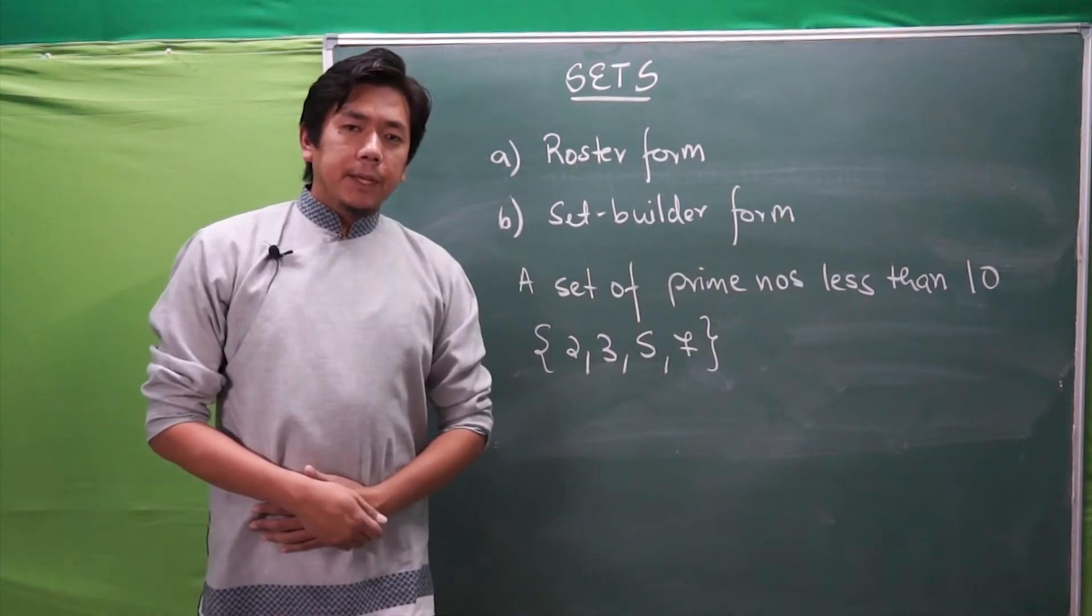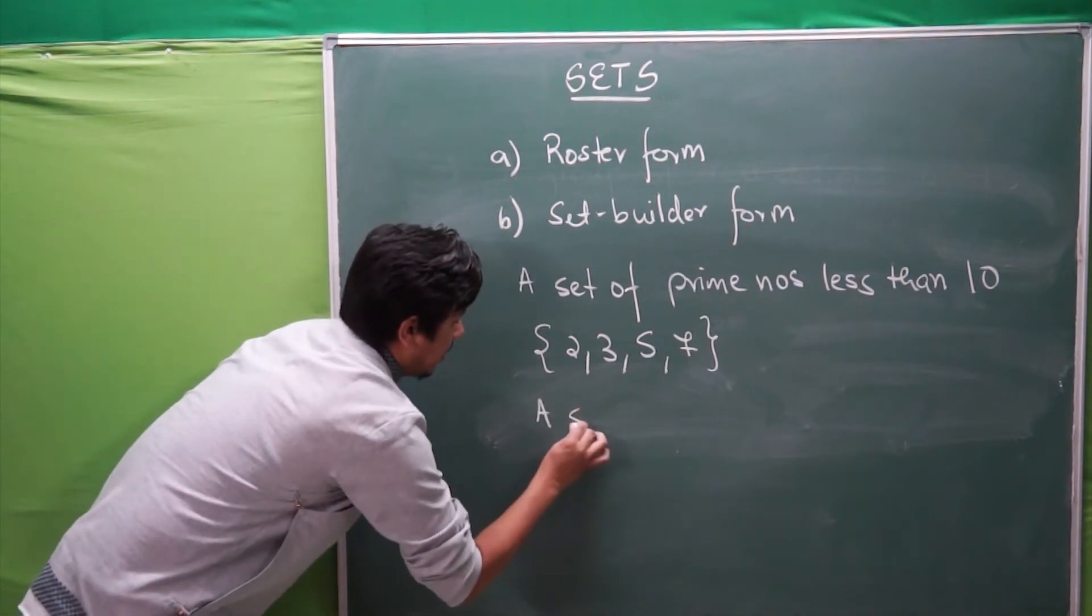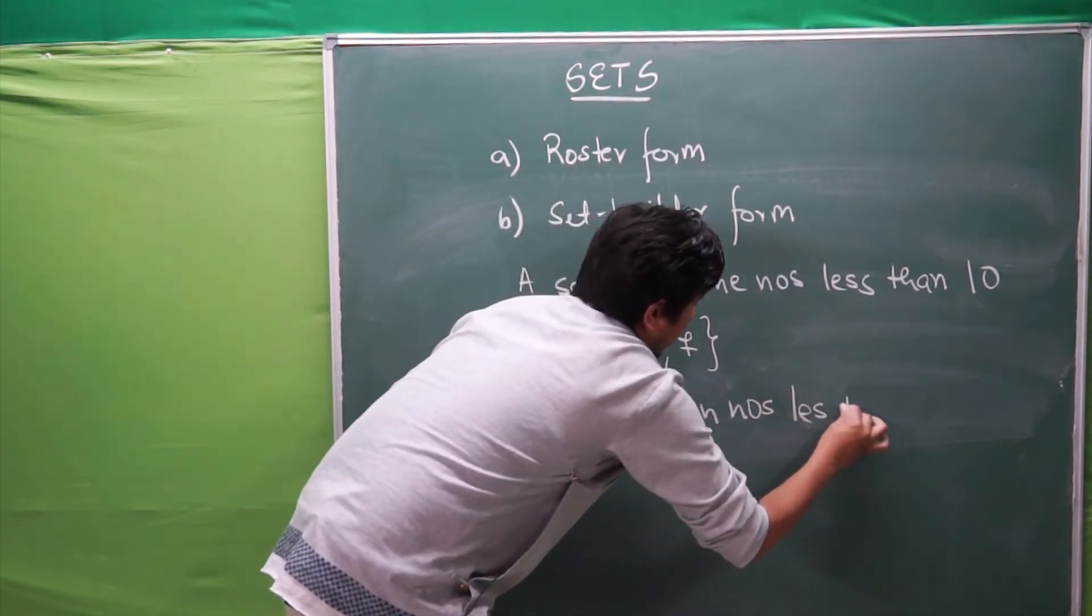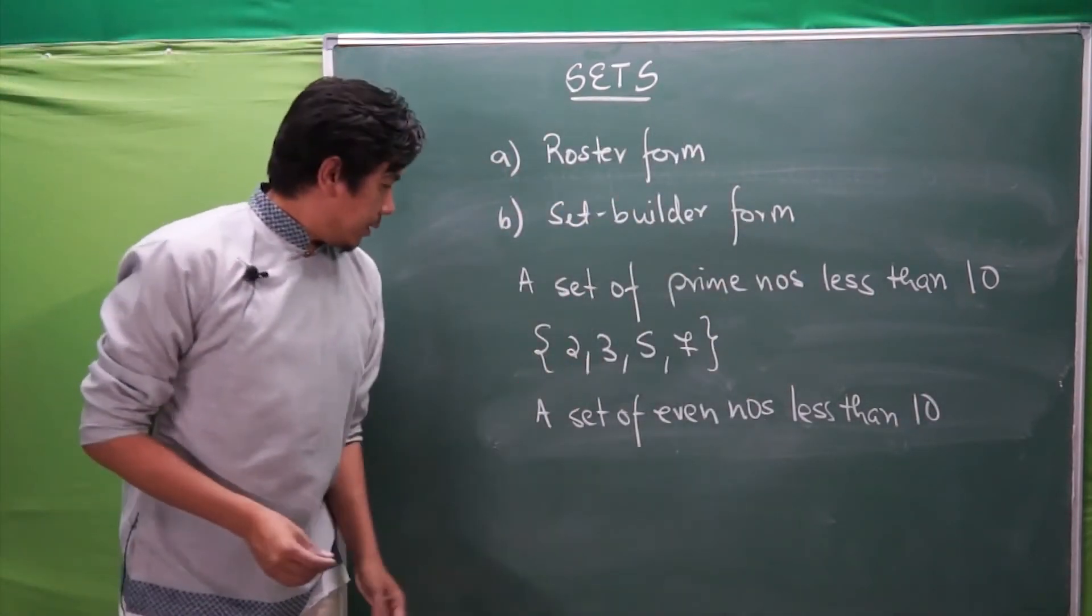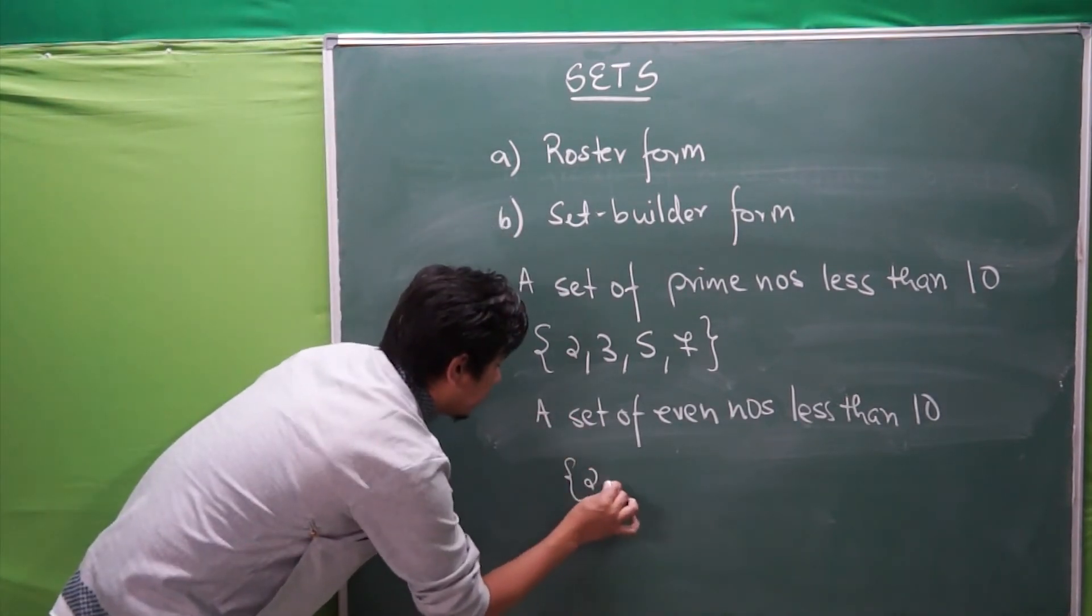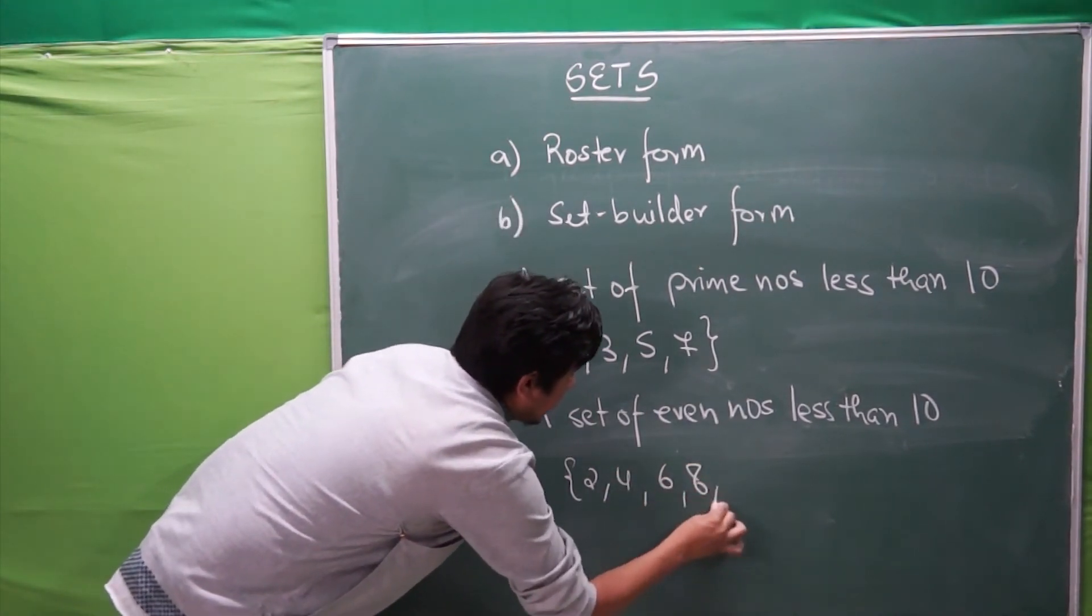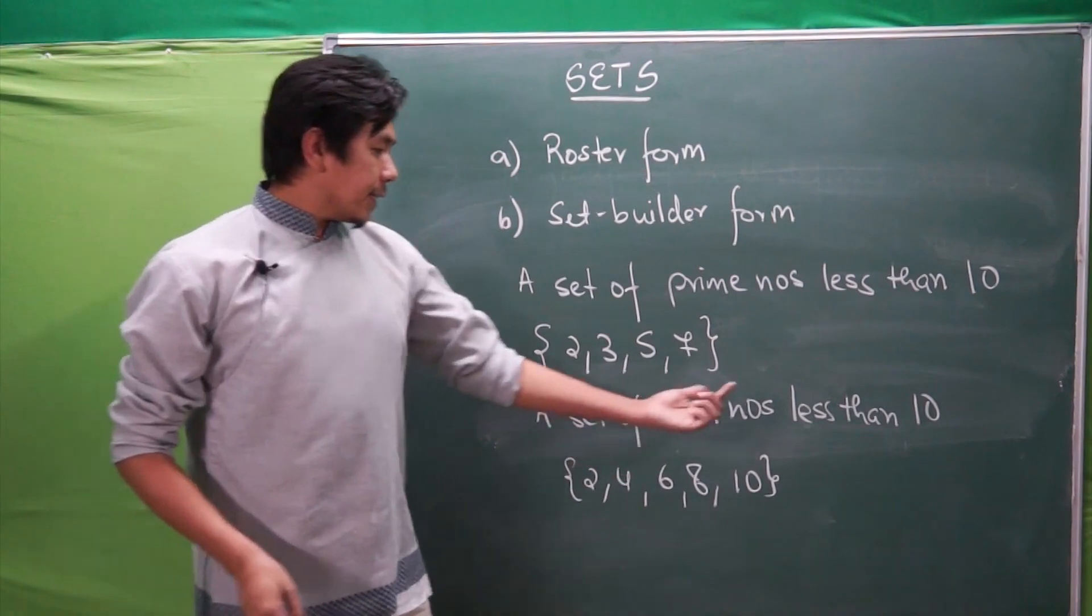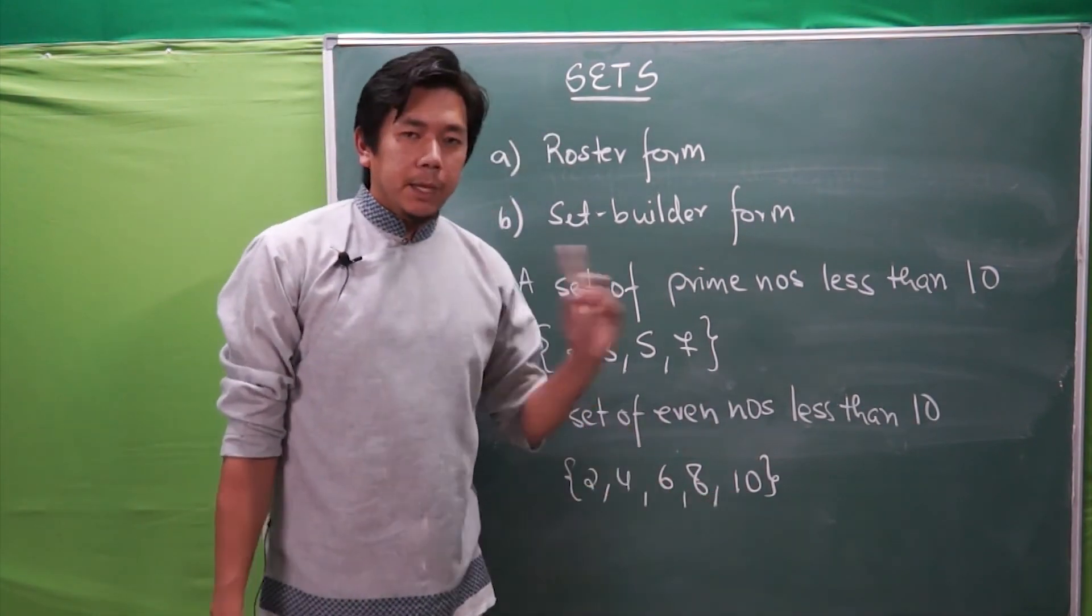Similarly, next example, we can write a set of even numbers less than 10. In this condition, less than 10, all the even numbers. To begin with first, we have 2, then next 4, 6, 8 and 10. Now, over here, what is being said is it is less than 10. Since it is less than 10, therefore including 10 over here would be wrong.